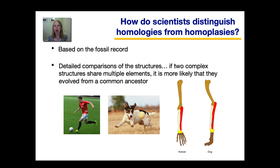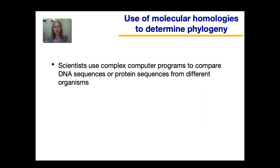If on the other hand you compared two structures that were only superficially similar, but their internal structure wasn't very similar, then that's more likely to be a homoplasy. So far we've looked at homologies in structure or morphology, but we can also use molecular homologies to determine how closely related different species are and to be able to trace their phylogenetic relationships.